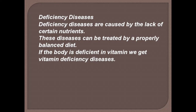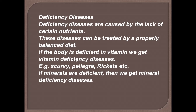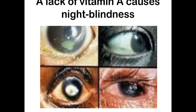If the body is deficient in vitamins, we get vitamin deficiency diseases — for example, scurvy, pellagra, rickets etc. Lack of vitamin A causes night blindness. As you can see in this image, the person suffers from night blindness or total loss of vision. If there is continuous lack of vitamin A in the diet, that person may suffer from this deficiency disease called night blindness.